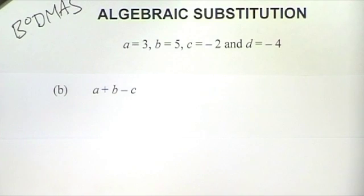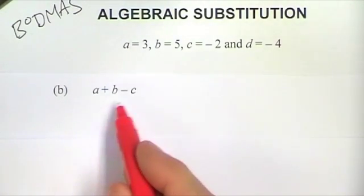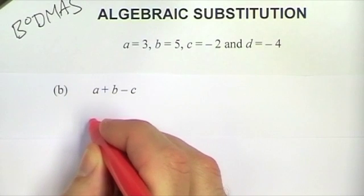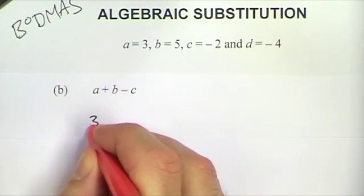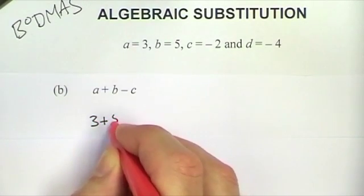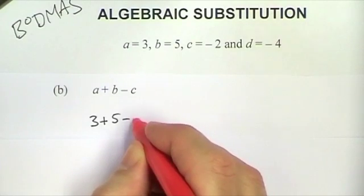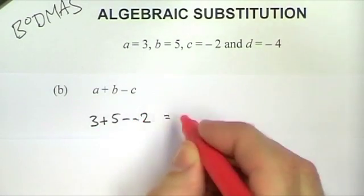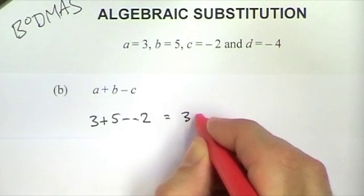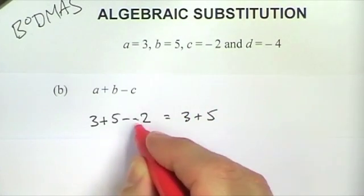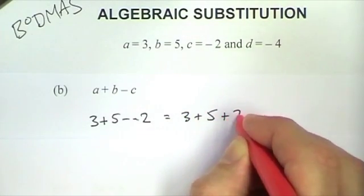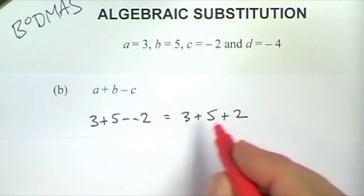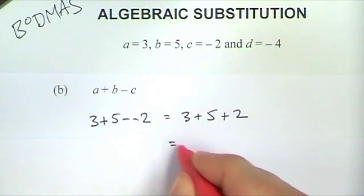The next expression is a plus b minus c. So a is substituted with 3, plus b is 5, minus and c is minus 2. That becomes 3 plus 5, but this minus minus 2 becomes a plus 2. So this is 3 plus 5 is 8 plus 2, which equals 10.